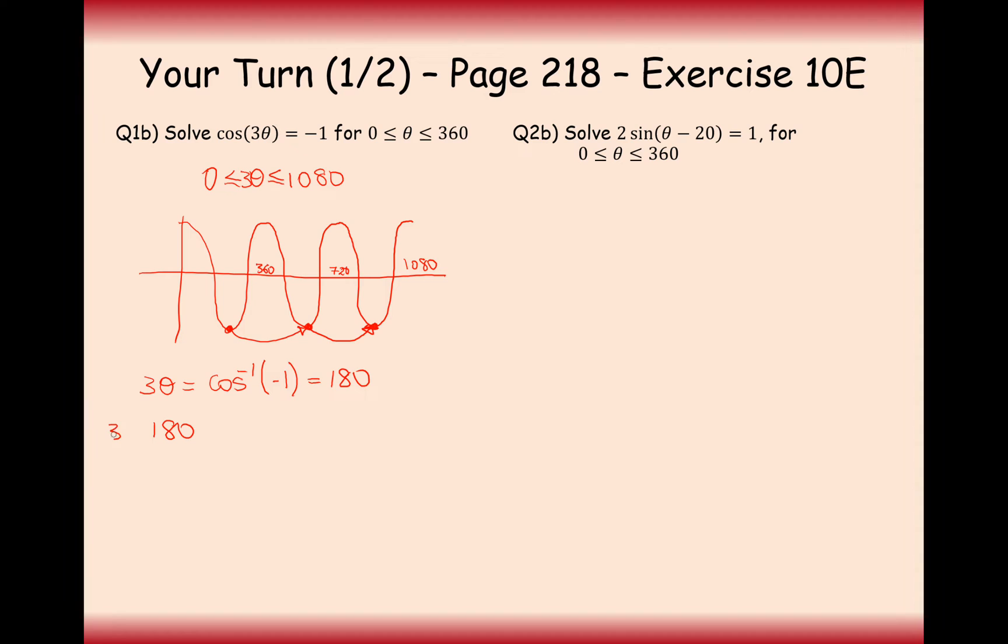The next solutions are going to be 3θ equals 180, so now we do 180, add 360, and we get 540. Then we add on another 360, and we get 900. These are all of our values that when we do cos of it, we get minus 1. So what we have to do now is divide through by 3, and we get 60, 540 divided by 3 is 180, and 900 divided by 3 is 300. These are our three answers for this question here.